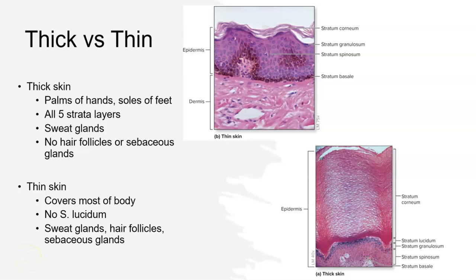Let's take a quick look at thick versus thin skin. Thick skin has a noticeably thicker stratum corneum compared to thin skin. The thinnest skin is found on your eyelids, while the thickest is on the palms of the hands and soles of the feet. Thick skin contains all five strata and has sweat glands, but no hair follicles or oil glands. Thin skin covers the rest of the body, lacks the stratum lucidum, so has only four layers, but contains sweat glands, sebaceous oil glands, and hair follicles.